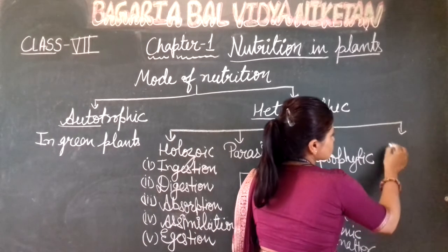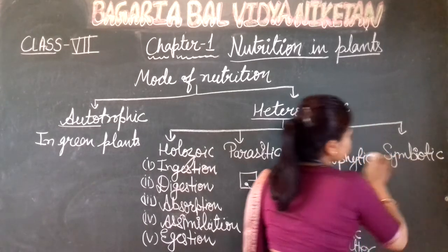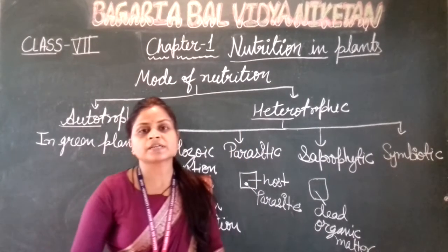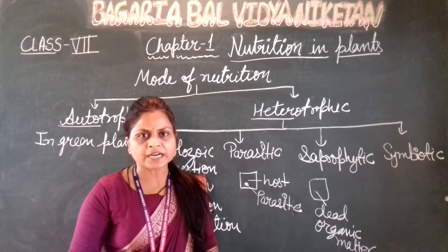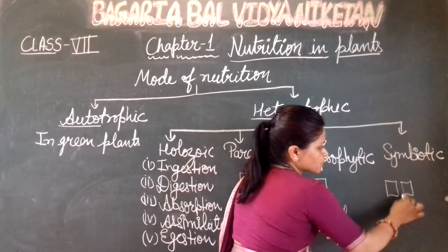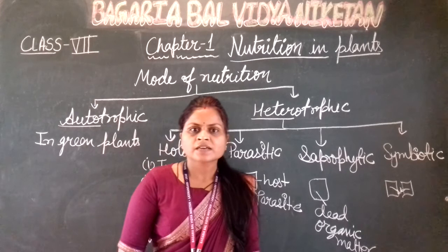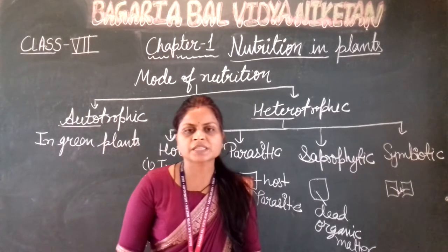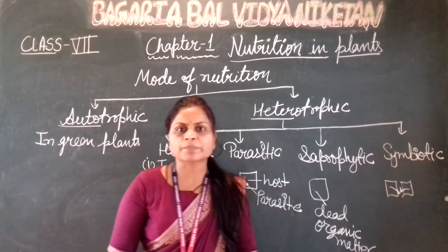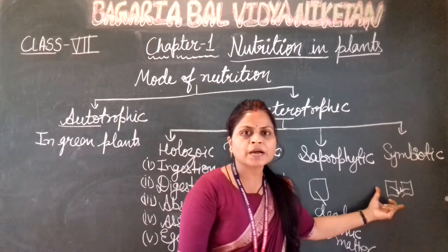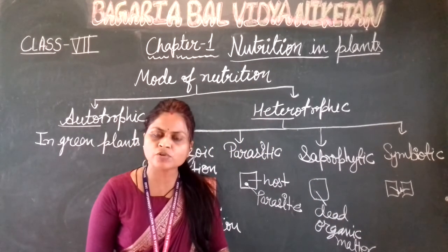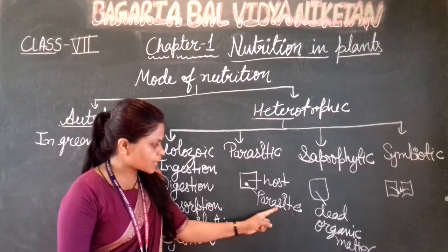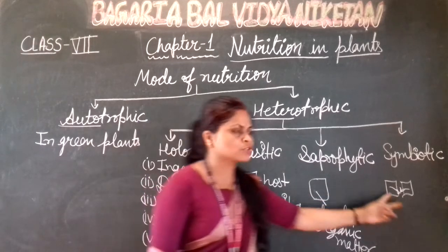Next is symbiotic mode of nutrition. In this type, there are two animals or living beings, and both are dependent on each other. एक animal food provide करता है और दूसरा किसी ना किसी तरीके से protection या nutrition provide करके help करता है — unfavorable conditions में protect करके। In symbiotic mode, it can be plant-plant, animal-animal, or plant-animal pairs. दोनों एक दूसरे को फायदा पहुंचाते हैं, जबकि parasitic में सिर्फ एक host पर depend करते हैं and the host gets no benefit.